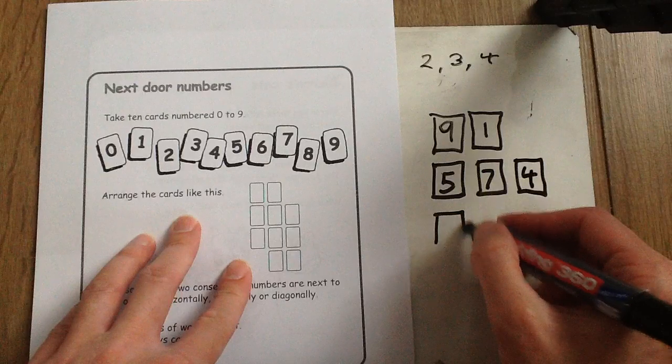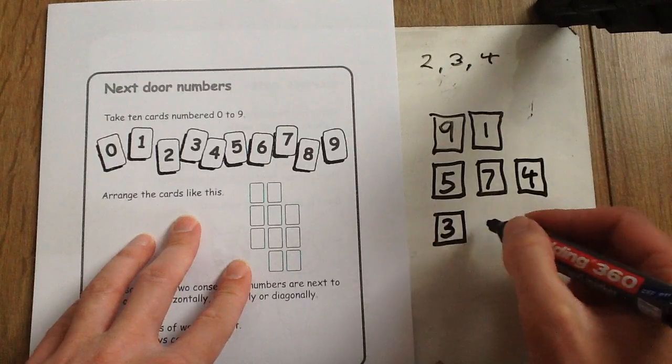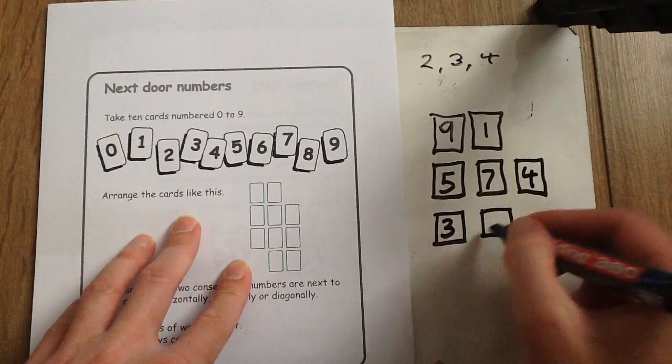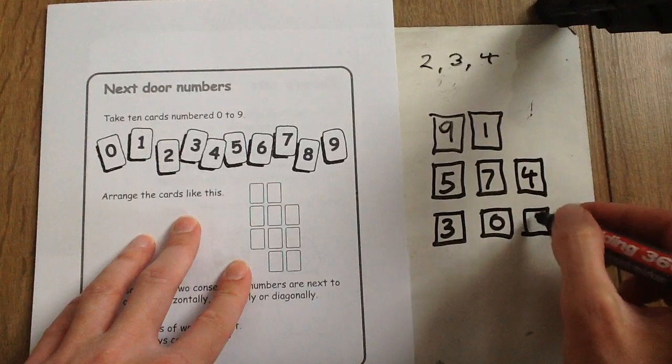Then in the row underneath you could have the digits 3, 0 and 2.